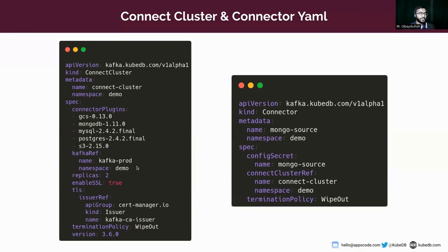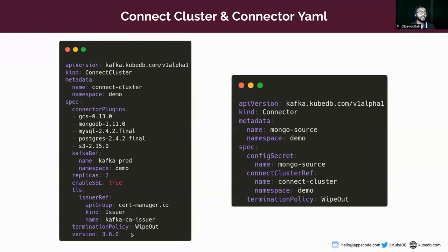Here is the name of our connect cluster and connector. In the spec section, the connect cluster has fields named connector plugin, Kafka replicas, and many more. In connector plugins, we specify the connector plugin for our connect cluster, and we support five connector plugins: GCS, MongoDB, MySQL, PostgreSQL, and S3. Here is the Kafka reference — in the background of the Kafka Connect cluster there is a Kafka, referenced via AppBinding name and namespace. Replicas means the number of worker nodes. If you want to enable TLS, you enable it and specify the cert-manager issuer. Here is the termination policy field, and the version — we are using 3.6.0.